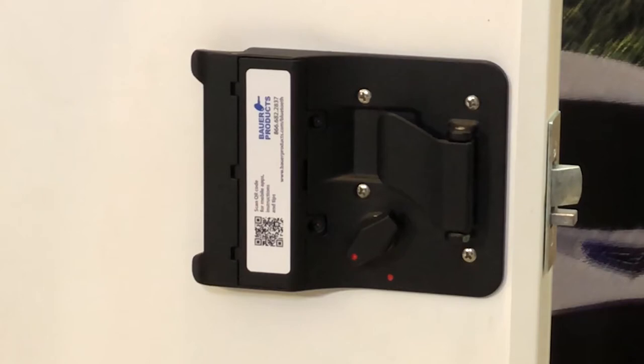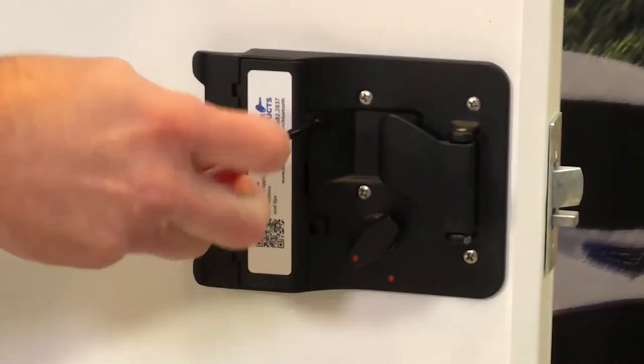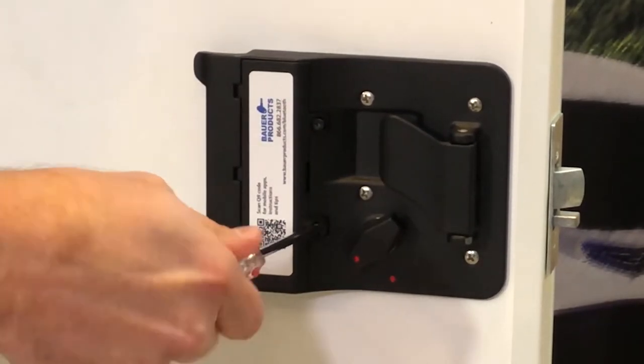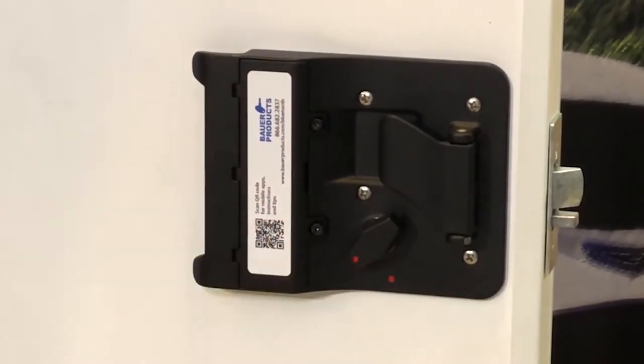To reset your Bauer Smart Lock to the factory preset code of 3715, you must remove the battery cover and remove a battery for at least 10 seconds.